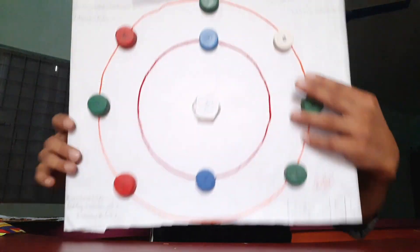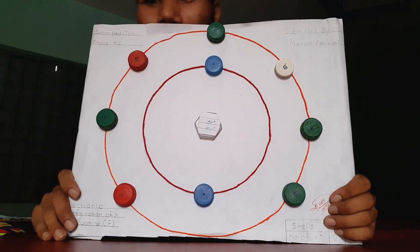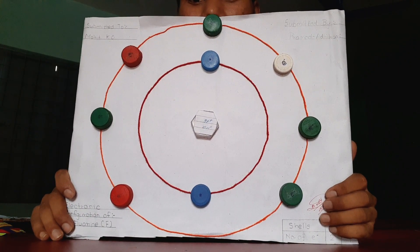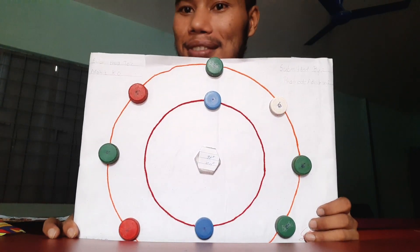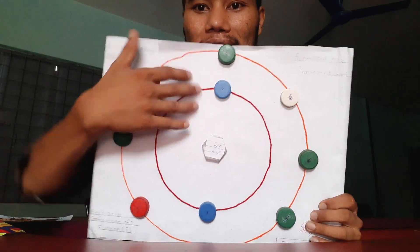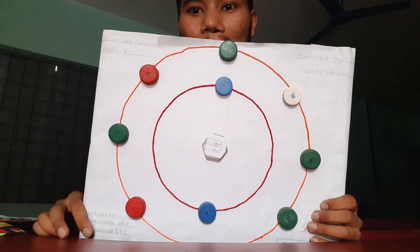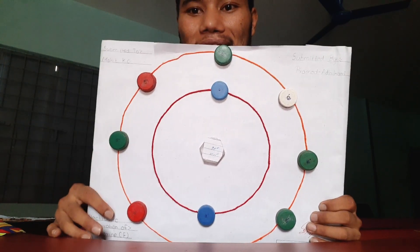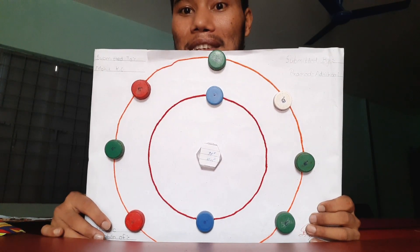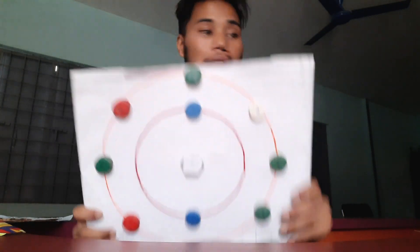This is made by Charloshan Pokrel and he has made the atomic model of fluorine. He has used the lid of a bottle to indicate the electrons — that is also part of the creativity, and I am very happy with that.